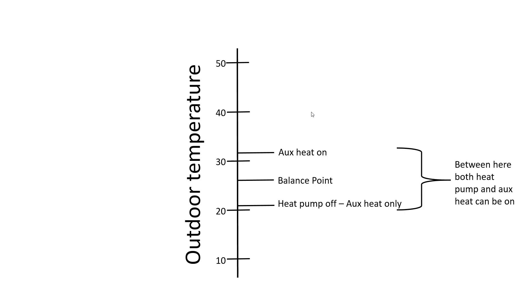Between these two points, we can have both the heat pump and auxiliary heat on at the same time. That's just my preference. I find that's best when it is at its balance point. The heat pump is running 24-7 to keep up with the heat loss from the house at 20 degrees outside temperature.